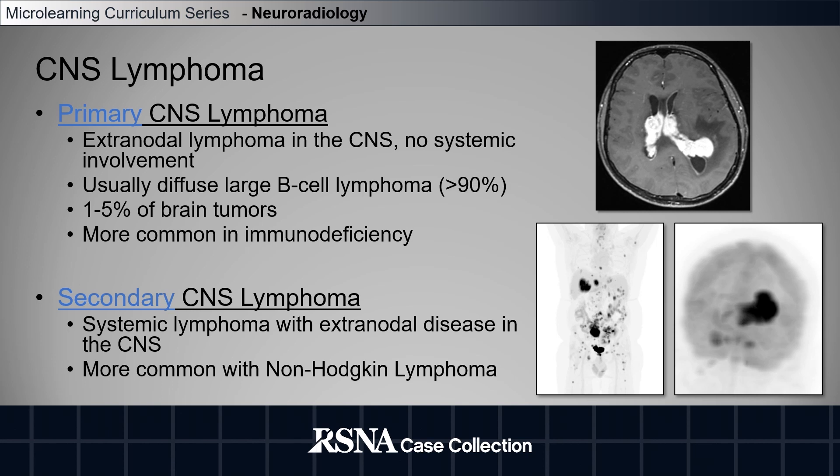Secondary CNS lymphoma will present with systemic involvement also. The two images on the bottom of the slide show a case of secondary CNS lymphoma. On the left, we have a MIP from an FDG PET scan of the whole body showing numerous avid lymph nodes and, in addition, an FDG avid brain mass. This is more common with non-Hodgkin lymphoma.